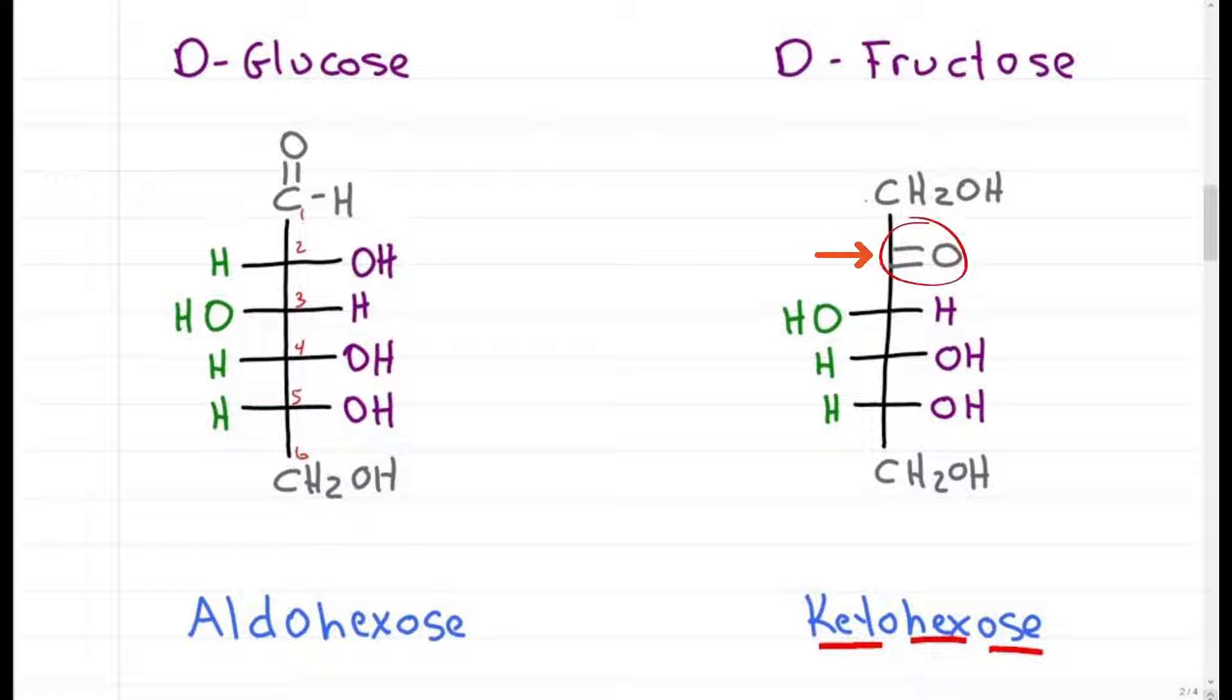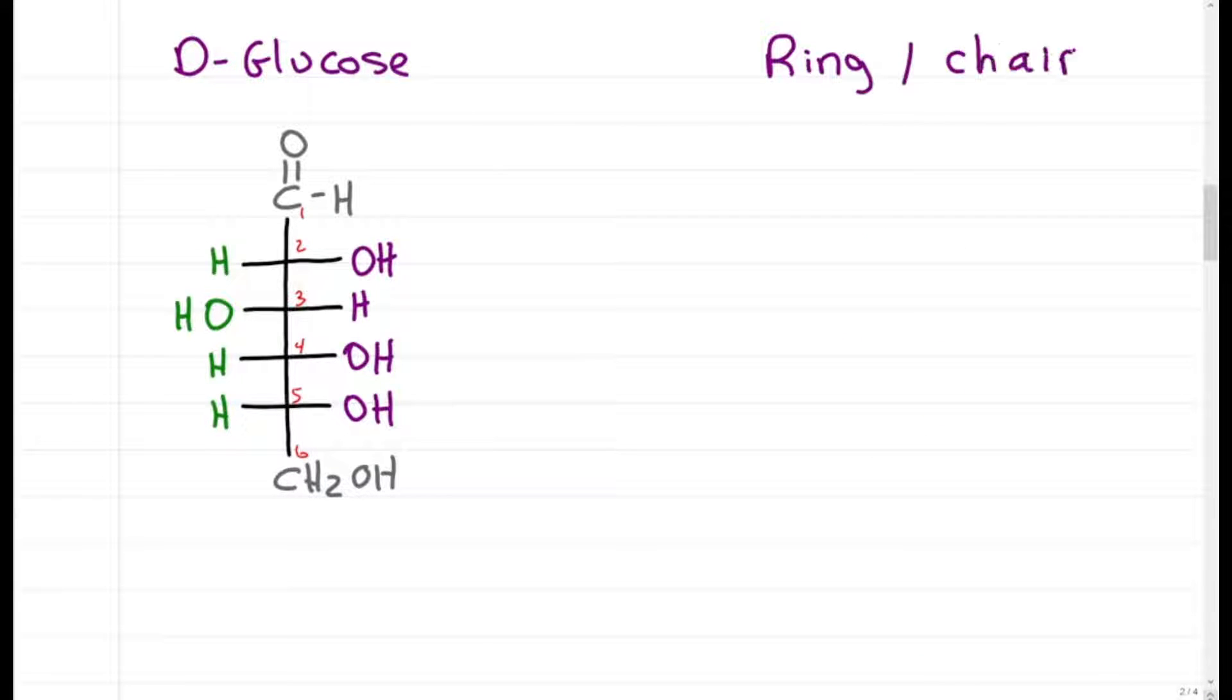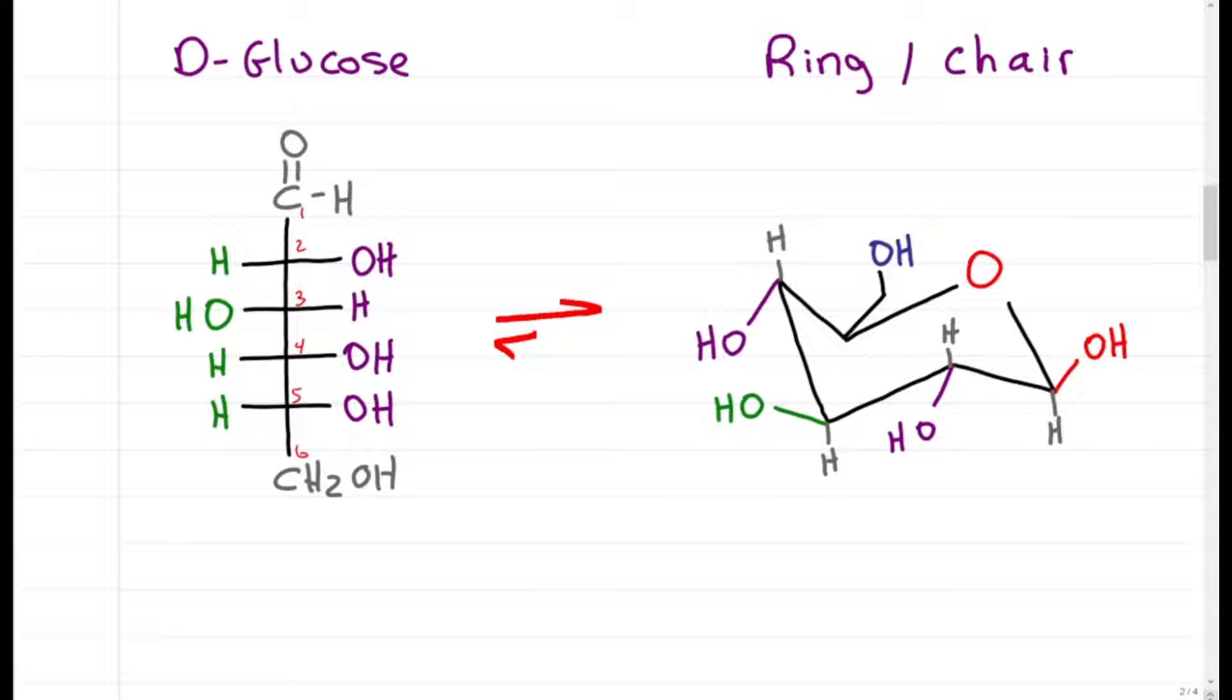And since ketone is the highest priority, once again we number from the top. Sugars will naturally interconvert between their linear and ring forms. Can you see why glucose prefers to be in the cyclic or chair conformation? Let me know in the comments below.